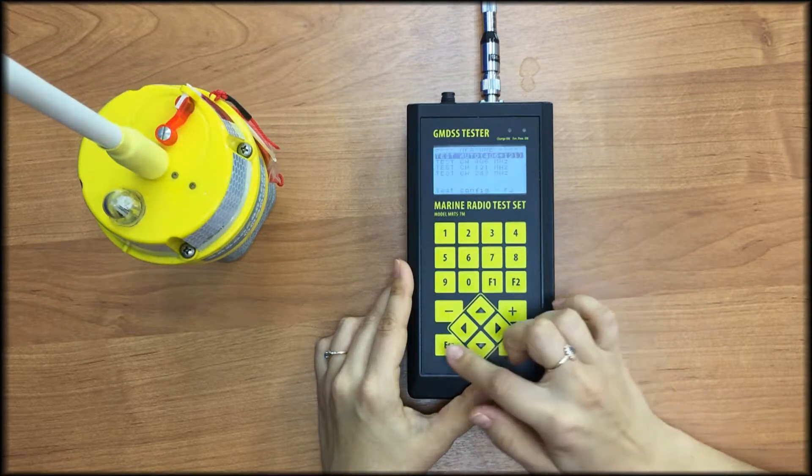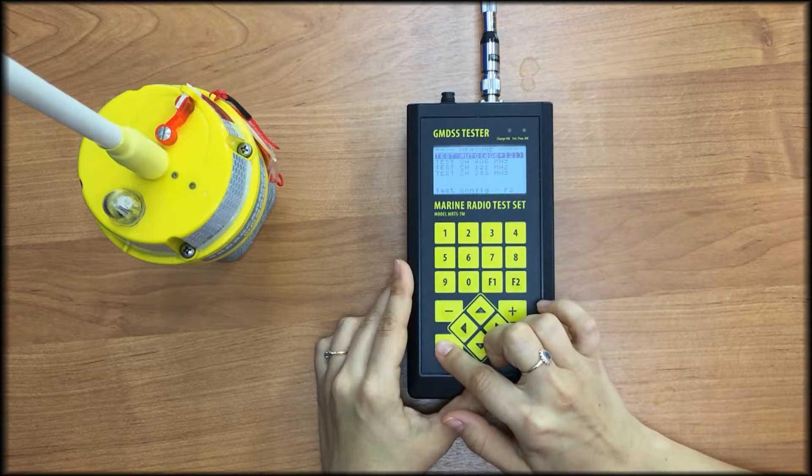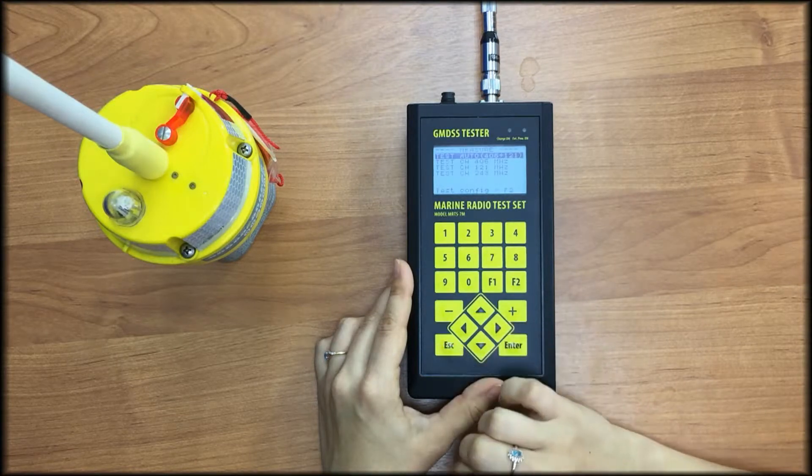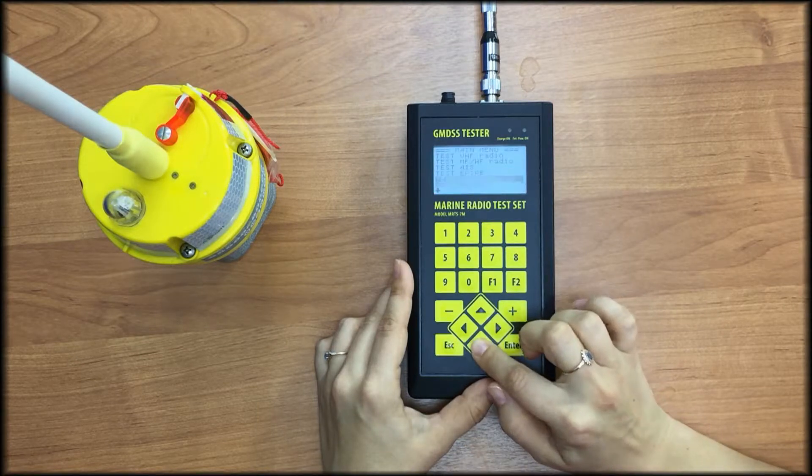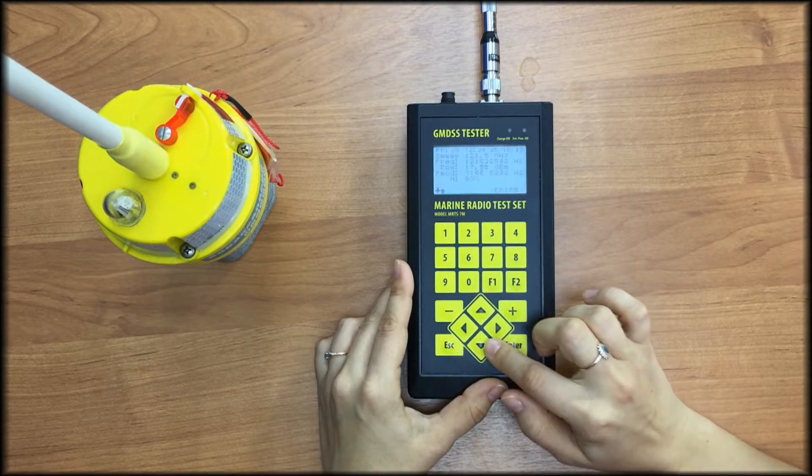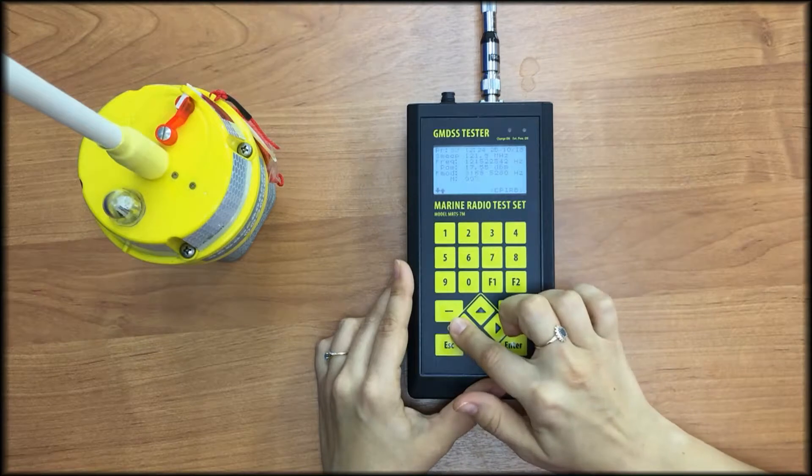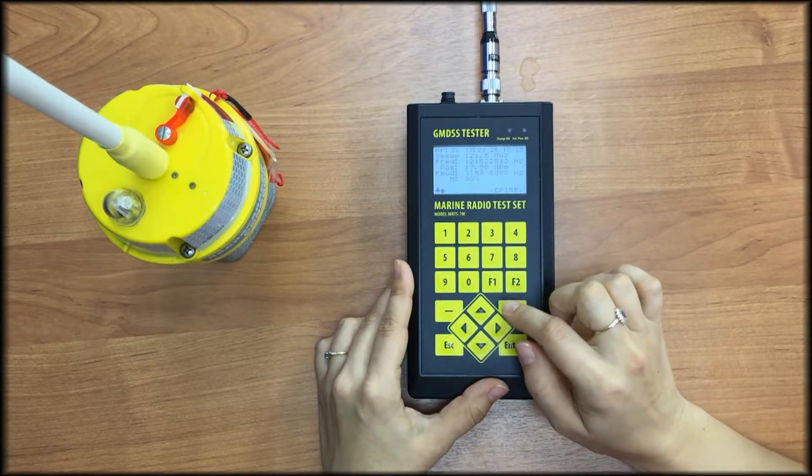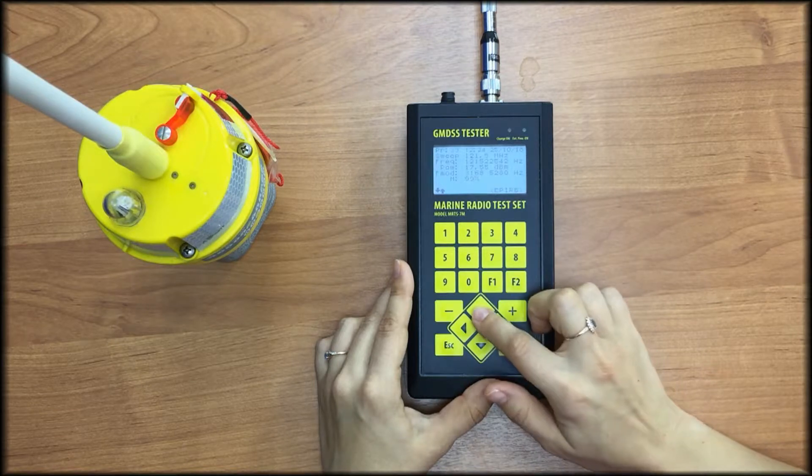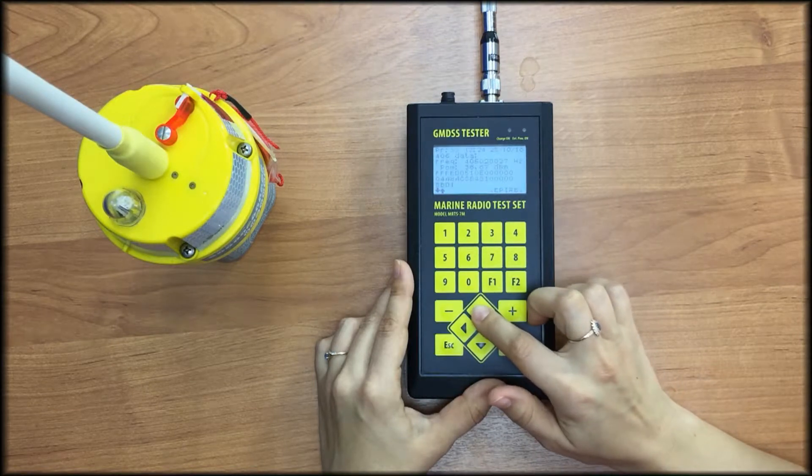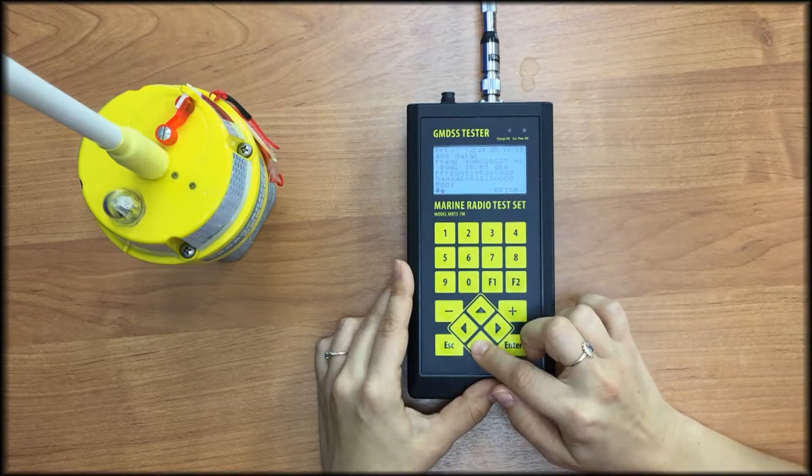We can check the test results in the memory of the tester. Go back to main menu, view profiles. We select the profile number 33 by pressing left and right buttons. Here is our profile. All data is saved. Scroll the results by up and down keys.